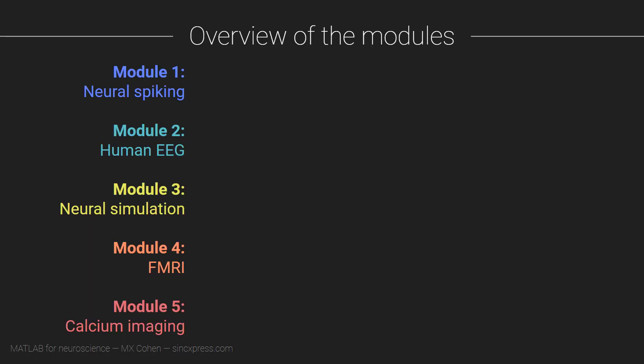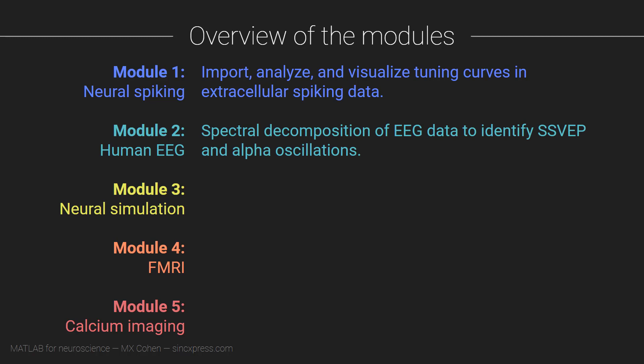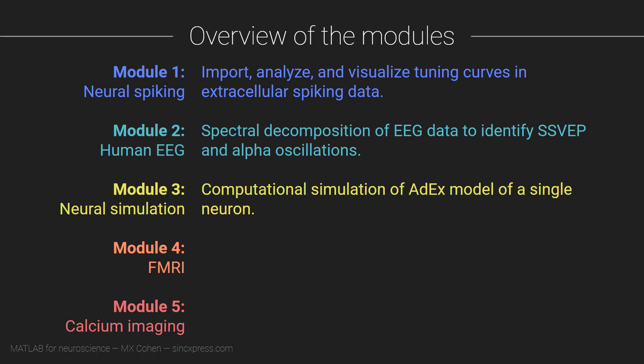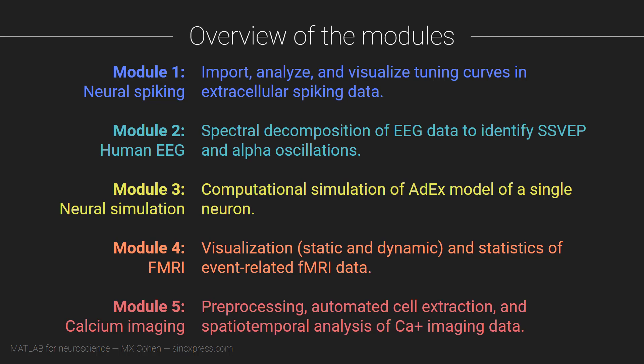This course is organized into five modules that span many different topics in modern neuroscience. In module one, we will work with extracellular spiking data. In module two, we'll do some spectral analysis of human EEG data. Module three is a computational simulation of a neuron. Module four focuses on visualization and statistics of fMRI data. And finally, module five is about image analysis and principal components analysis of calcium imaging data.